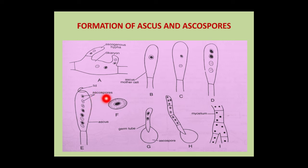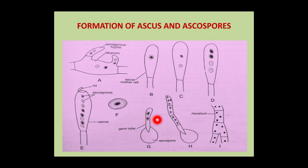These ascospores are released from the ascus by the removal of the apical lid. They are disseminated by wind, germinate on a suitable substratum with the help of a germ tube, and produce new mycelium. Thus, in Morcella, sexual reproduction occurs by way of plasmogamy and karyogamy.